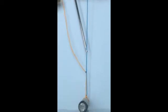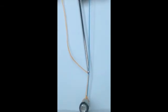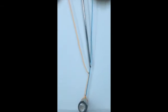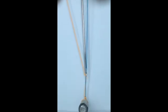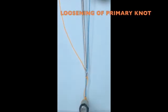If tension is placed on the blue limb or the post limb, it may cause obstruction in knot delivery and more importantly cause the primary sliding knot to loosen.